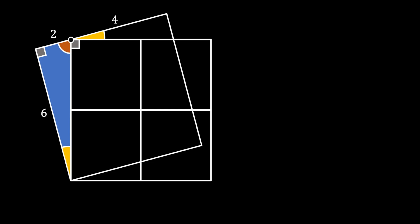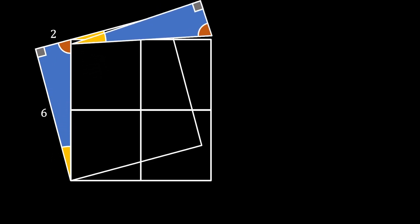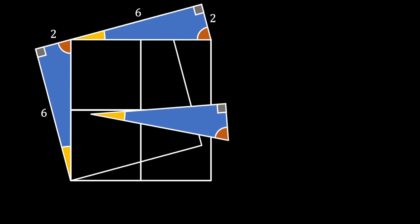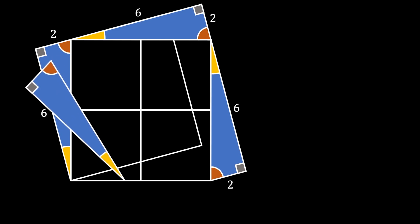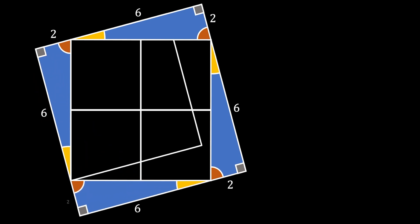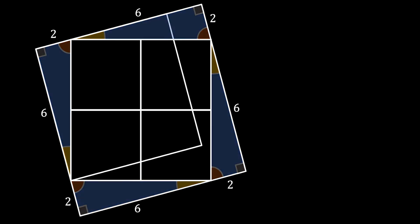Using this fact, we take the blue shaded triangle, rotate it, and align it on top of the big square. Repeating this two more times — each time aligning the hypotenuse with a side of the big square — we form a large tilted square with side length 8.